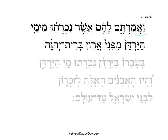The verb v'amartem comes from Aleph, Mem, Resh, and in this case we have a Kal Vav-consecutive perfect, 3CP — 'and you will say.'